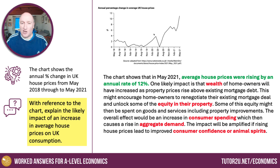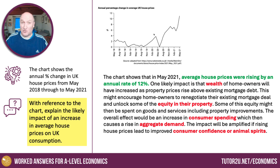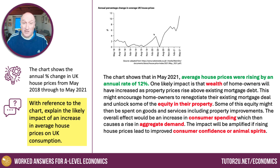This might encourage homeowners to renegotiate their existing mortgage deal and perhaps unlock some of the equity in their property. Equity is the difference between what the house is worth on the market and the outstanding mortgage debt. So if your house is worth £300,000 and you have a £200,000 mortgage, you've got £100,000 of equity. Some of this equity might then be spent on goods and services including property improvements.